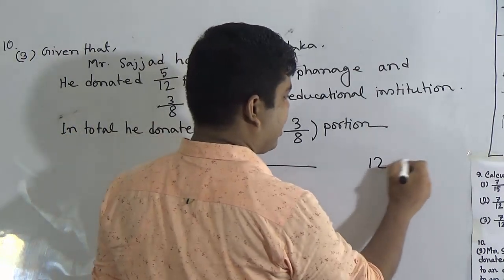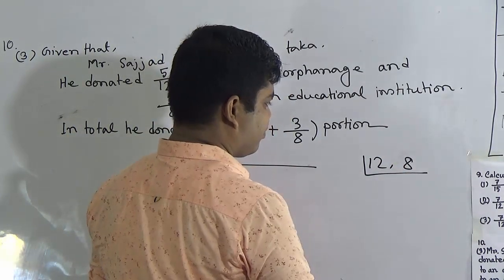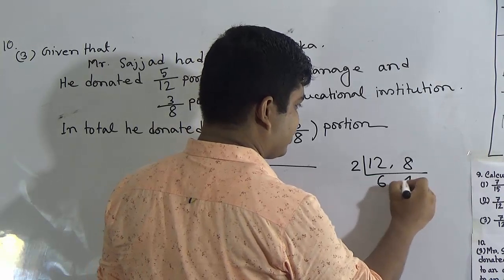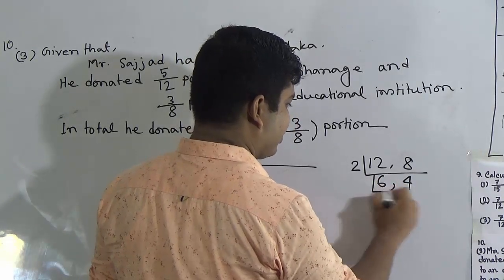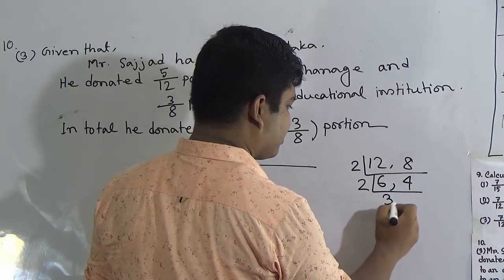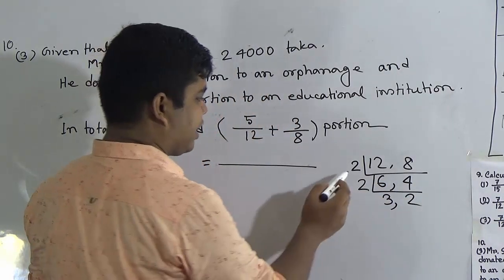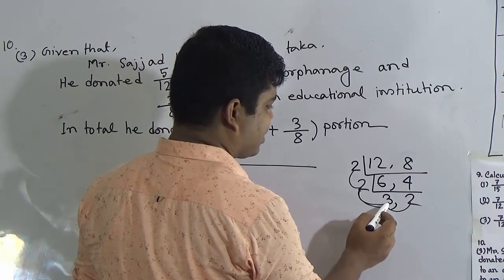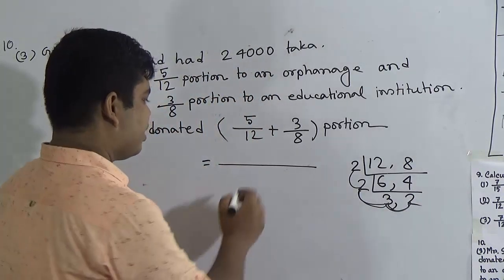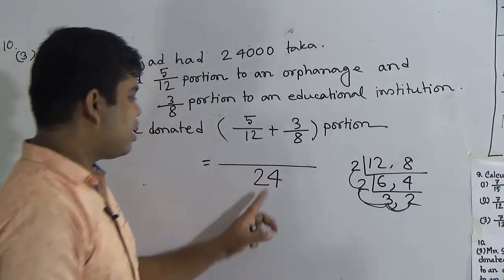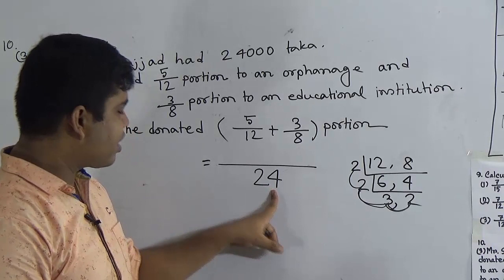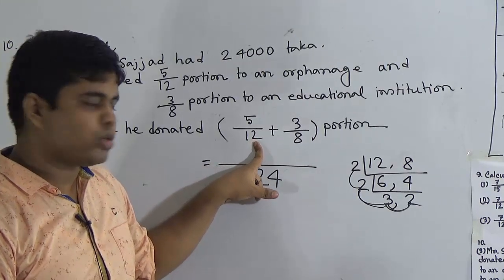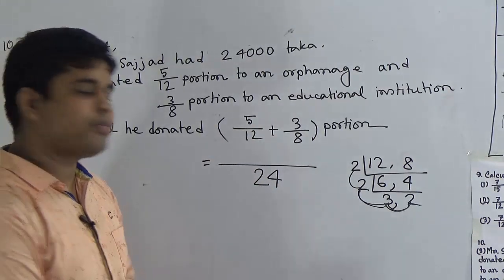LCM of 12 and 8: both numbers are divided by the prime number 2 — giving 6 and 4. Divide again by 2 — giving 3 and 2. So LCM = 2 × 2 × 3 × 2 = 24. Now we divide this LCM 24 by the denominator of the first fraction: 24 ÷ 12 = 2, and 2 × 5 = 10. Then we divide 24 by the denominator of the second fraction: 24 ÷ 8 = 3, and 3 × 3 = 9.